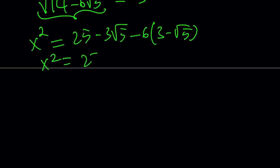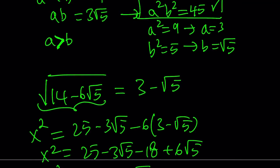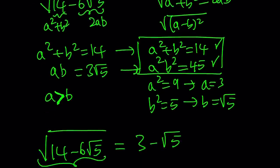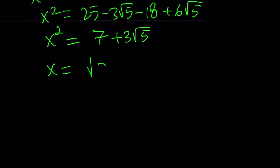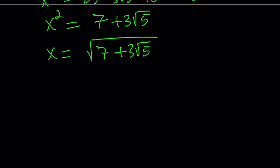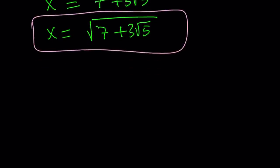Distributing gives us 25 minus 3 root 5 minus 18 plus 6 root 5. Simplifying further: 25 minus 18 is 7, and negative 3 root 5 plus 6 root 5 is positive 3 root 5. Since x is positive — the first term is greater, as we can easily verify — x equals the square root of 7 plus 3 root 5. Taking the negative square root won't work, so that's the answer we're looking for.